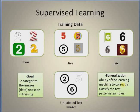The key concept in supervised learning is generalization — the ability of the learning machine to correctly classify unseen test data into the corresponding categories. A learning machine is considered efficient if it has very good generalization ability. Basically, the efficiency of a learning machine is characterized in terms of its generalization ability.